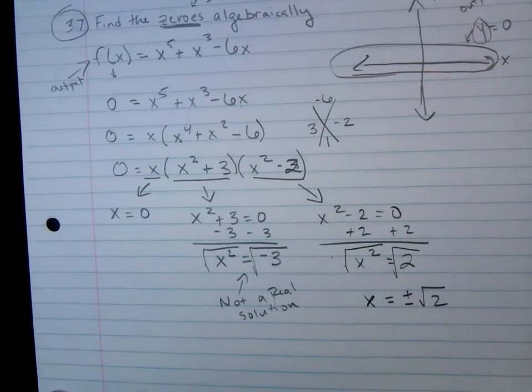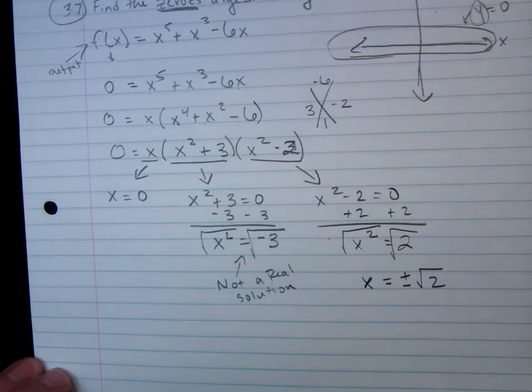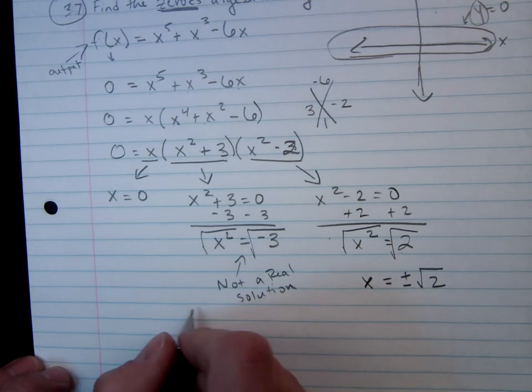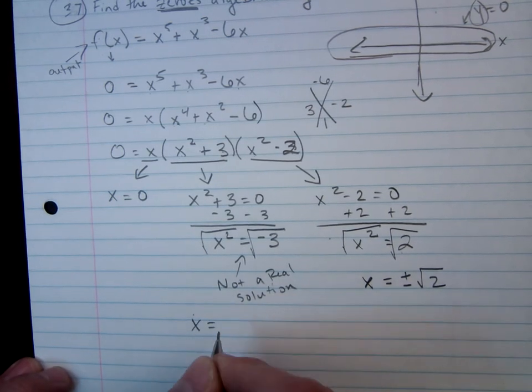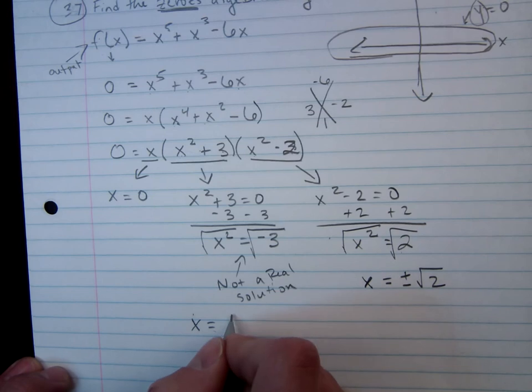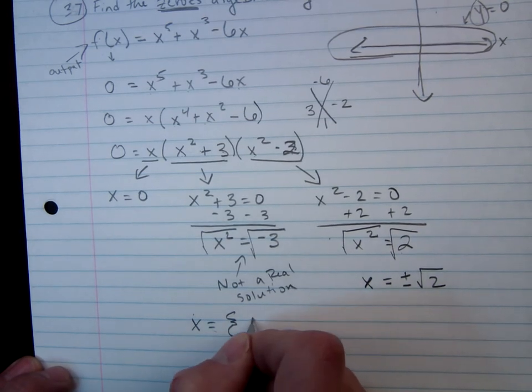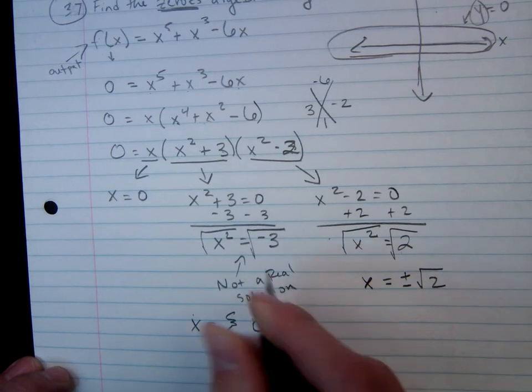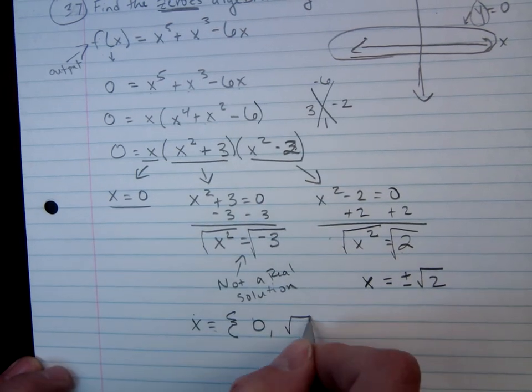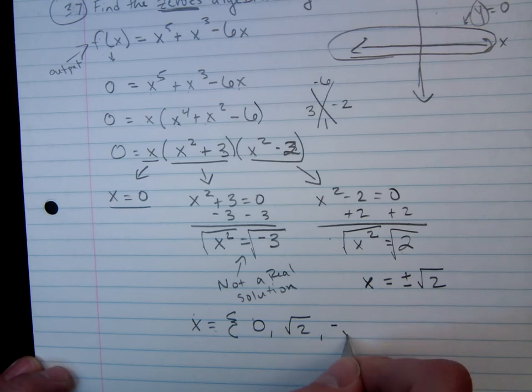And I'll go ahead and move up here a little bit so I have a little bit of additional space. So we can write our solution in set notation that x is equal to, the zeros would be zero, square root of 2, and negative square root of 2.